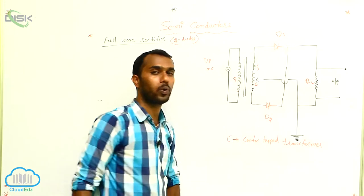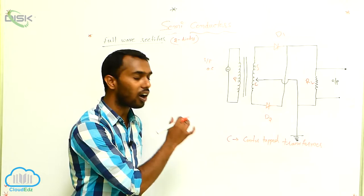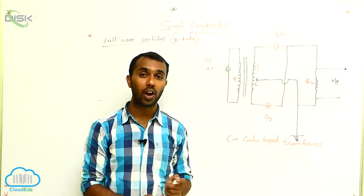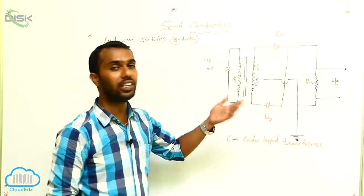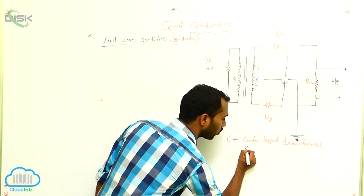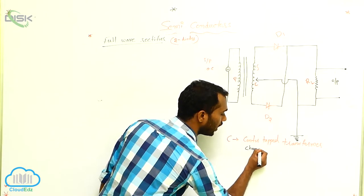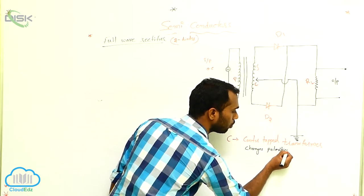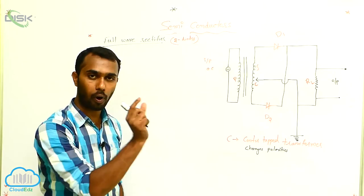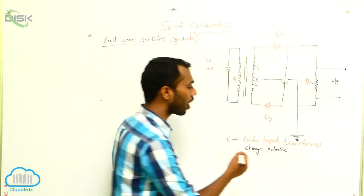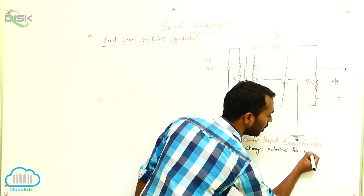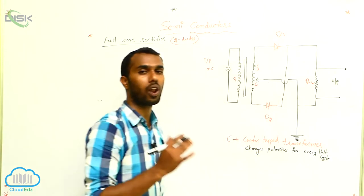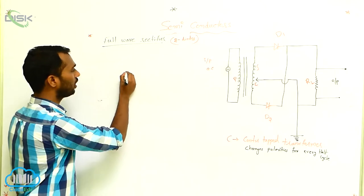What is the use of the center tapped transformer? It is very simple — the center tapped transformer does only one thing: it changes the polarities. Polarities means positive and negative. It changes polarities for every half cycle.